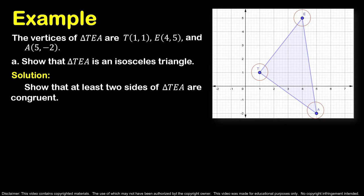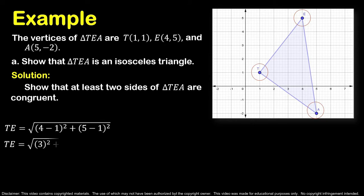To solve for the length of side TE, we have TE equal to the square root of (4 minus 1)² plus (5 minus 1)². Subtracting: 4 minus 1 is 3, and 5 minus 1 is 4. We now have the square root of 3² plus 4². 3 squared is 9 and 4 squared is 16. 9 plus 16 is 25. The square root of 25 is 5, so the length of side TE is 5 units.